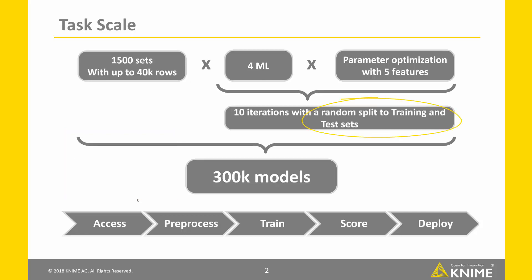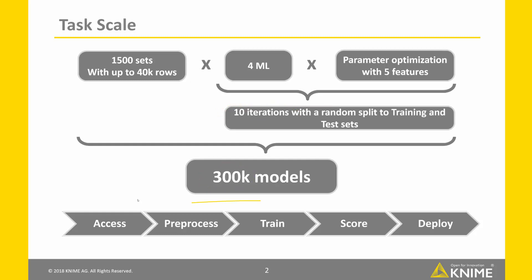First, we partition the data by random split into training and test sets. Then we train 4 machine learning models and optimize them using 5 features, and we repeat it 10 times. That means we'll build over 300,000 models. And aside from building the models for each dataset, we also need to access the data, pre-process them, select the best models, and then deploy them. This is the monster problem we are dealing with.